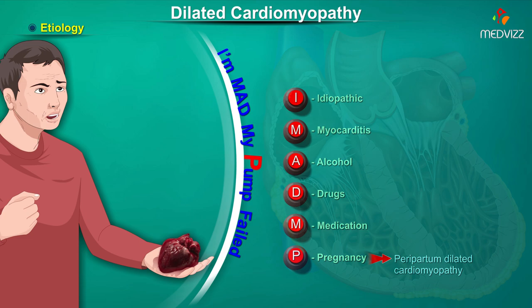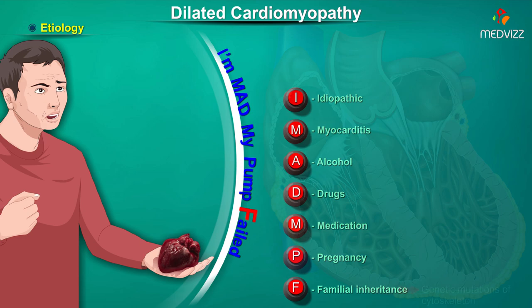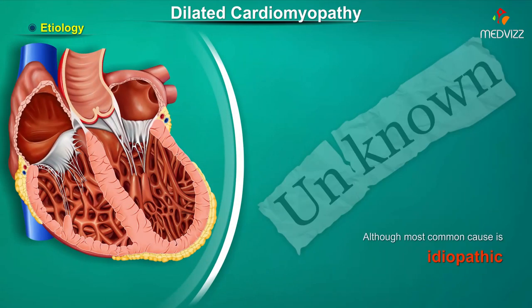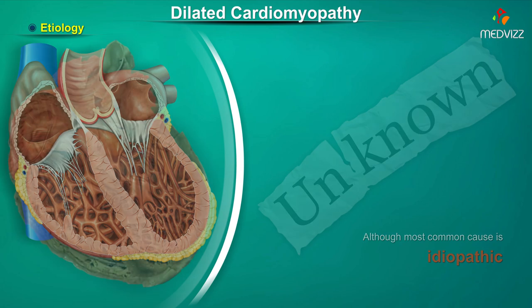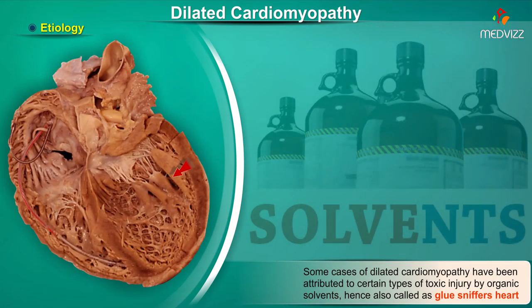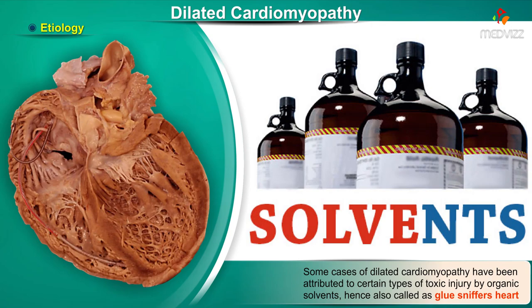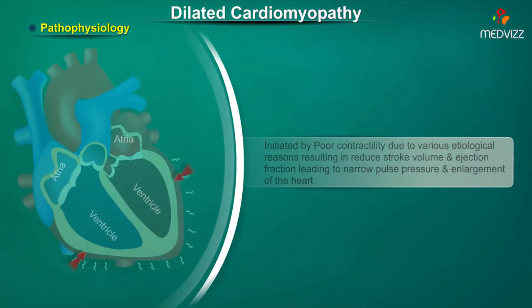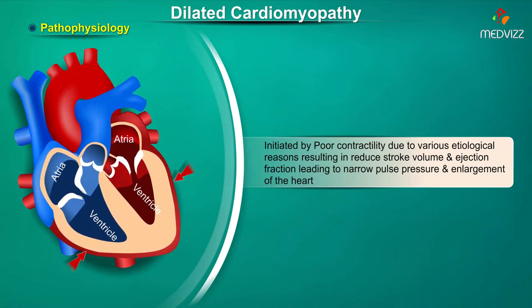Pregnant women can have peripartum dilated cardiomyopathy, defined as dilated cardiomyopathy within four weeks before delivery or five months after delivery. F stands for familial inheritance, where there can be genetic mutations of the cytoskeleton. Although the most common cause is idiopathic, some cases have been attributed to toxic injury by organic solvents, hence it is also called the glue-sniffers heart.